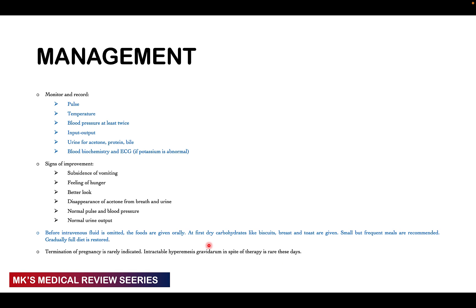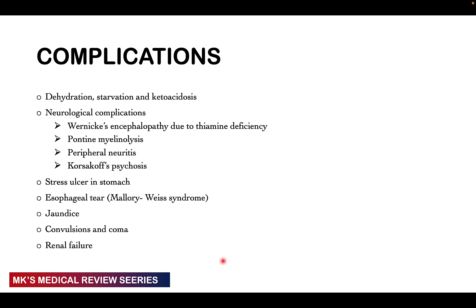Complications include dehydration, starvation, and ketoacidosis. Neurological complications include Wernicke's encephalopathy due to thiamine deficiency, pontine myelinolysis, peripheral neuritis, and Korsakoff psychosis. Other complications include stress ulcers in the stomach, esophageal tears such as a Mallory-Weiss tear due to excessive retching and vomiting, jaundice, convulsions, coma, and renal failure.